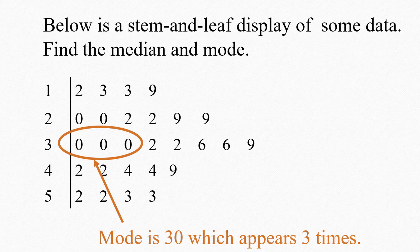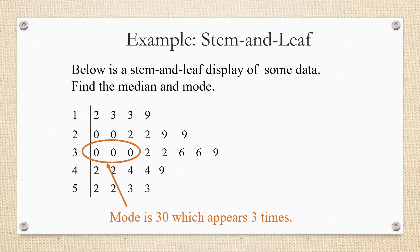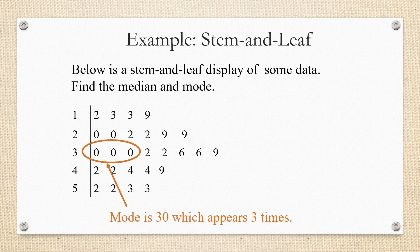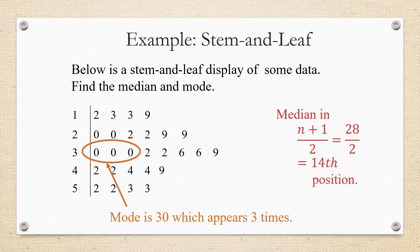Now let's find the median. If you recall, to find the median, we need to know the number of data values and locate the position n plus 1 over 2. So I'm going to count the number of data values: 1, 2, 3, 4, 5, 6, 7, 8, 9, 10, 11, 12, 13, 14, 15, 16, 17, 18, 19, 20, 21, 22, 23, 24, 25, 26, 27 data values. So we're going to take that number, add 1 and divide by 2. 28 divided by 2 is 14. So we know we're looking for the median in the 14th position.